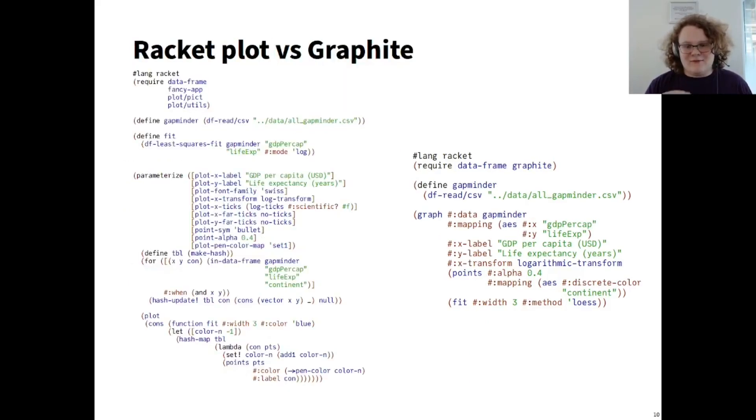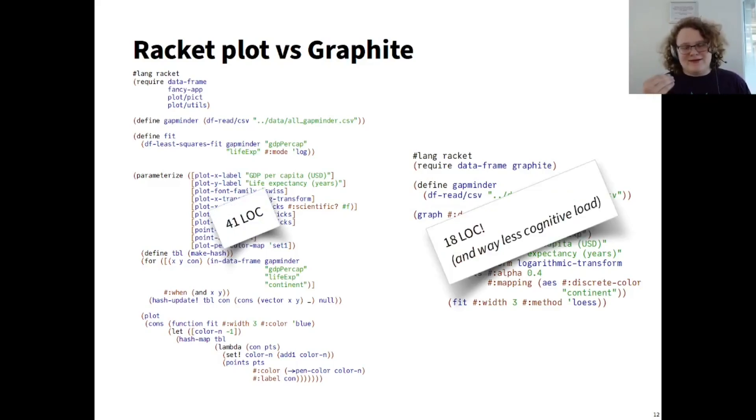For example, Racket already has a library called Plot, and Plot is great. Graphite uses it, but the problem with Plot is that because it is not standardizing on one form of data, it is occasionally inconsistent. By standardizing on this form of data, we're able to greatly reduce the amount of code that goes into an average plot. These two pieces of code produce the same image, but the left code is 41 lines of code, and the right code is 18 lines of code. And more importantly, because we built the code on the right, we know that it closely follows the statistical reasoning that we want to have while doing exploratory data analysis.